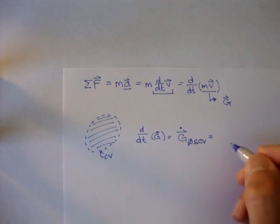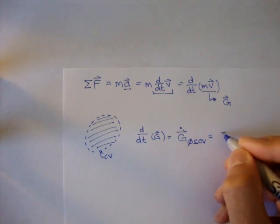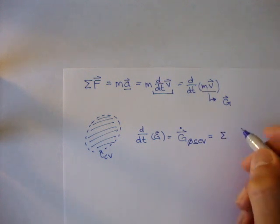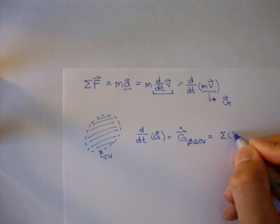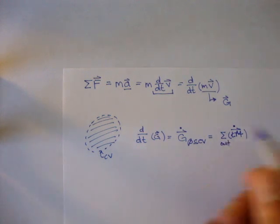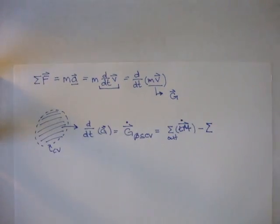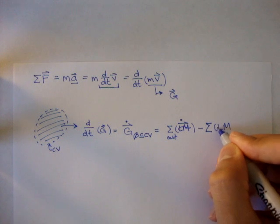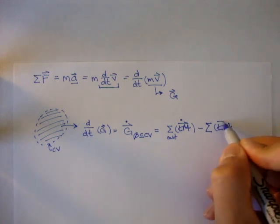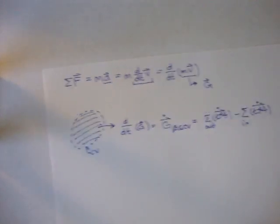Well, for those types of situations, we can just say that the momentum is equal to the sum of all the linear momentum flow rate that's coming out of the control volume, so the stuff coming out, minus the sum of all the linear momentum flow rate that's coming in.